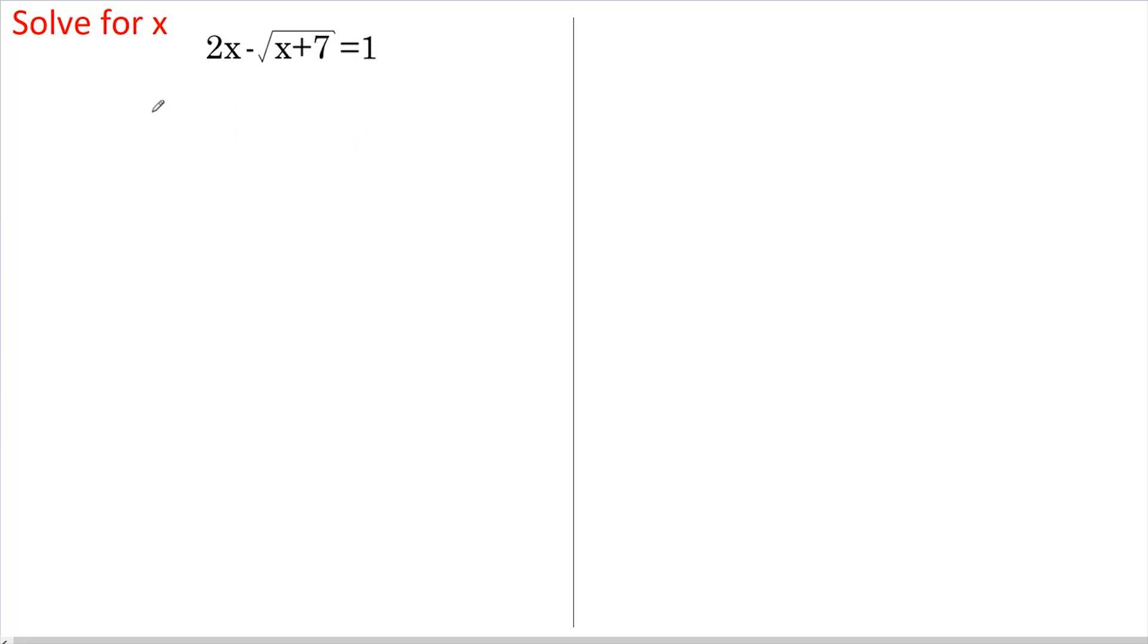So let's rewrite this as 2x minus 1 equals square root of x plus 7. We're now in a position to square both sides. So this becomes 2x minus 1 all squared equals, well, squaring a square root just eliminates the square root. So this becomes x plus 7.